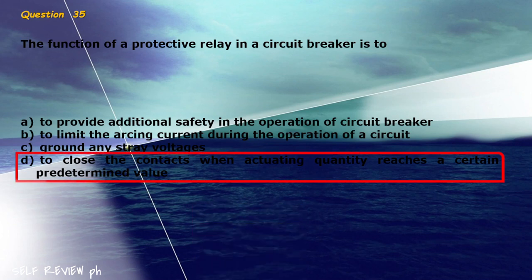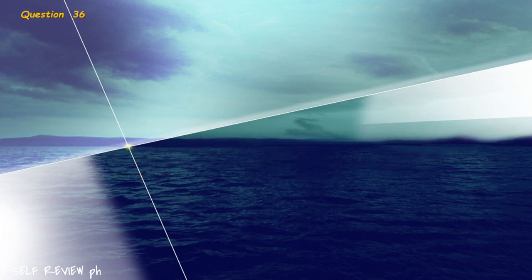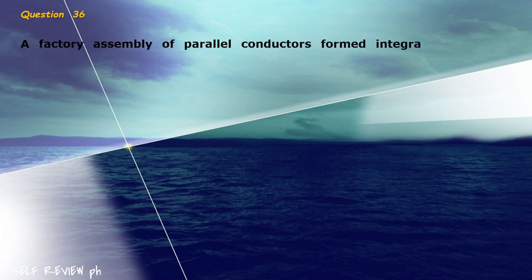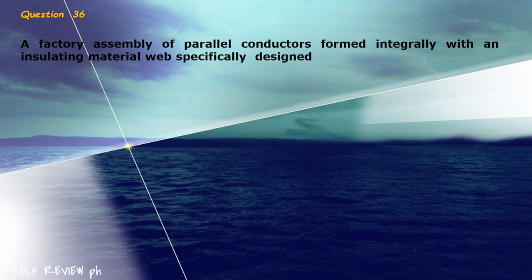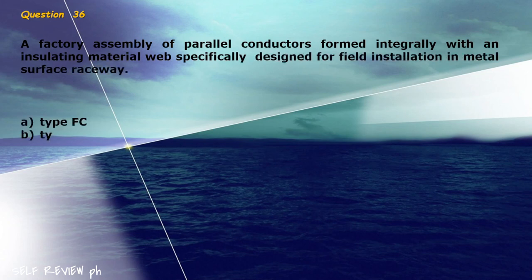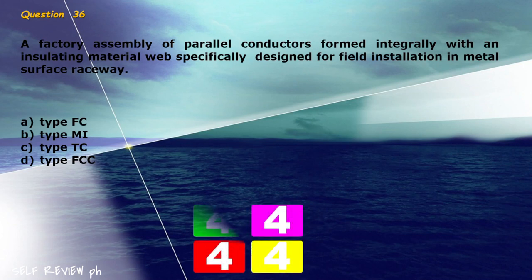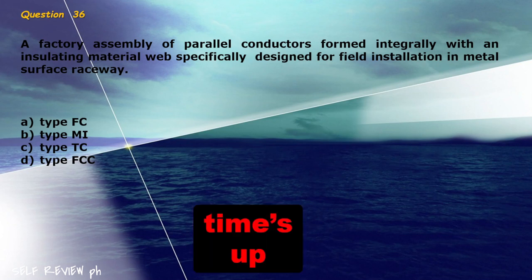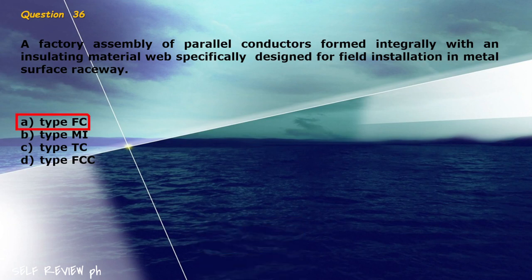Question 36: A factory assembly of parallel conductors formed integrally with an insulating material web specifically designed for field installation in metal surface raceway. A) type FC, B) type MI, C) type TC, D) type FCC. The correct answer is letter A, type FC.